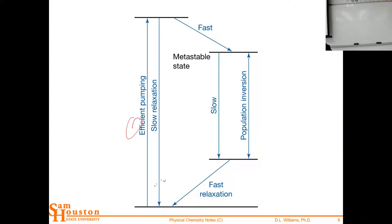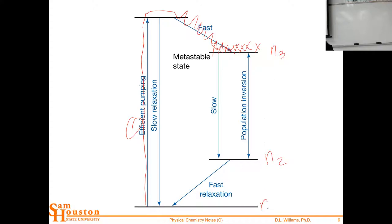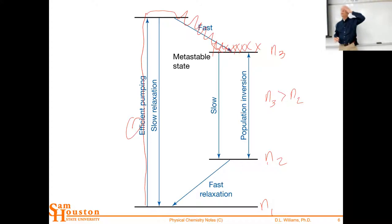We have efficient pumping of the molecules to an excited electronic state and then some non-radiative relaxation, ending up with a lot of molecules or atoms at a particular level. When you look at the population n3 compared to n2 - with n1 as the ground state - n3 is much greater than n2, yet n3 is at a higher energy. What we have there is a population inversion.